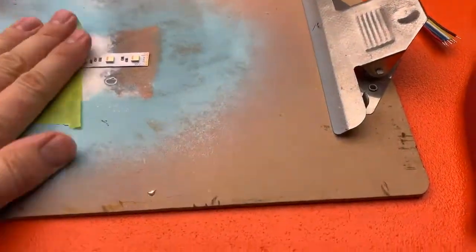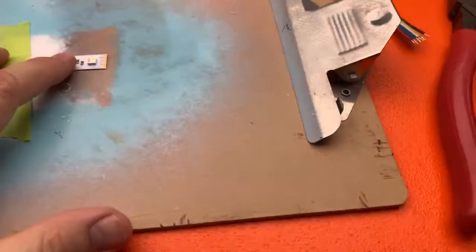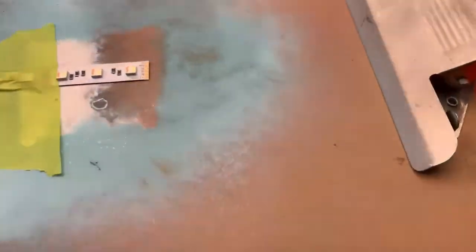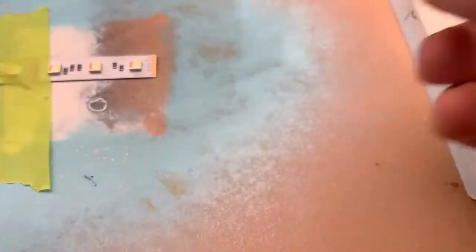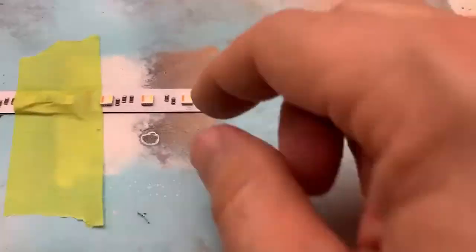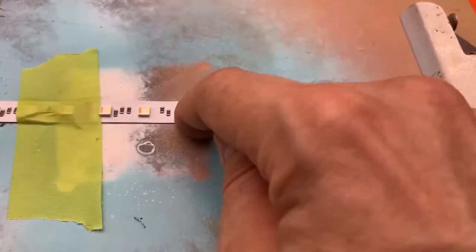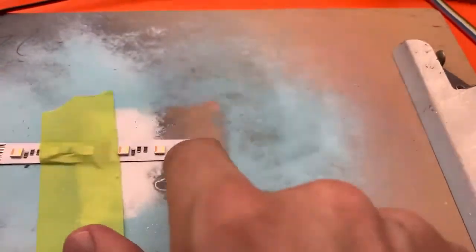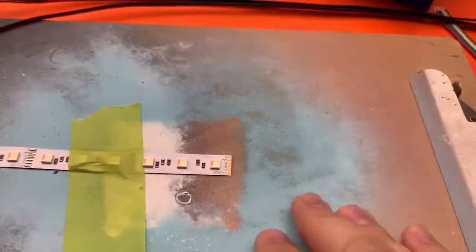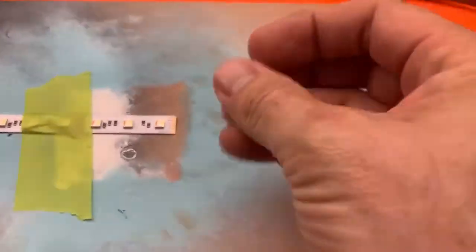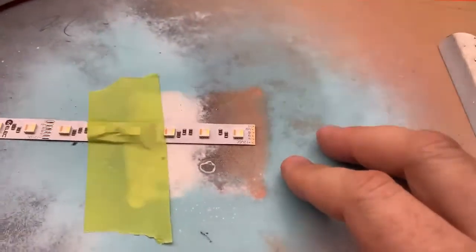The first thing you want to do is get the strip into a good spot and tape it down nice and firmly so you can push with the tip while you've got the cable in the other hand. You could peel back the double-sided tape, but if it's a dirty surface it can cause the tape to not work as effectively later on.